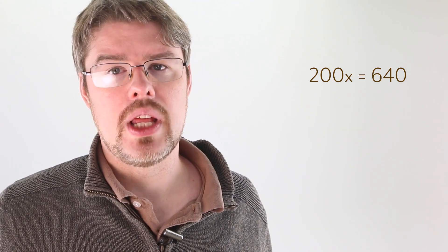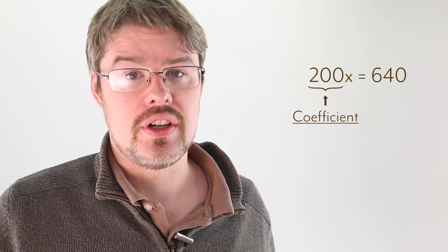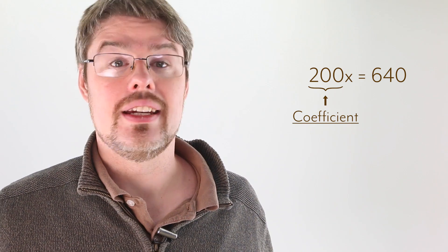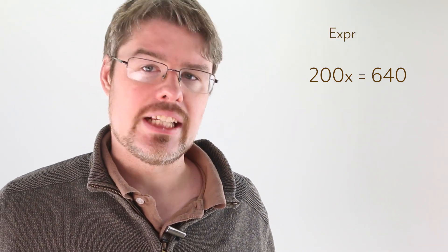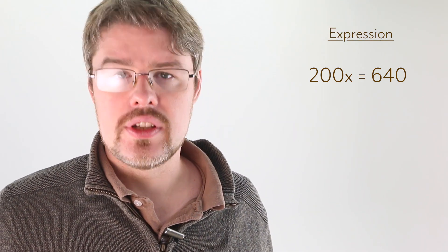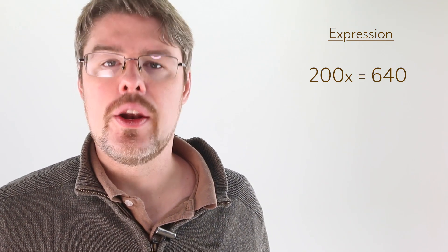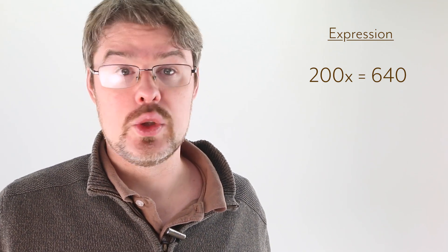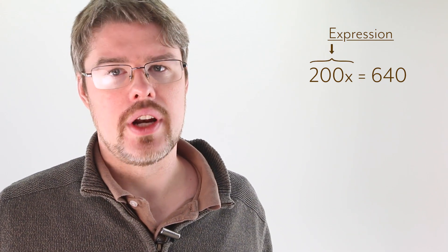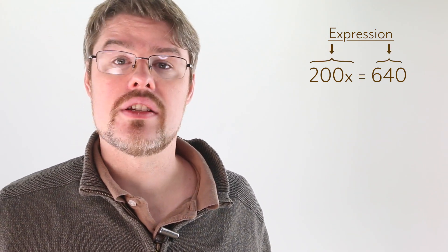The 200 that is being multiplied by x is called the coefficient of x. We see it so often that it gets its own name. An expression is a collection of symbols, numbers, variables, operators, and other mathematical elements that represent a quantity. We have two here. One expression is 200x, and the other expression is 640.